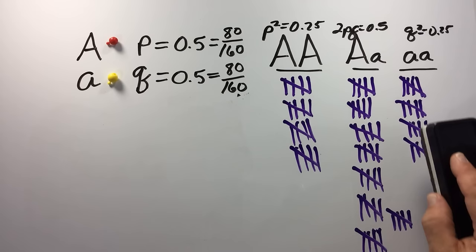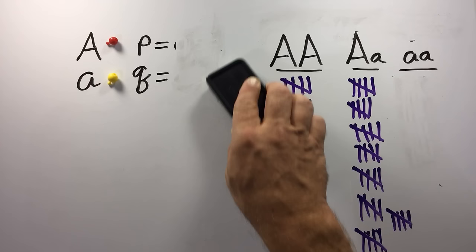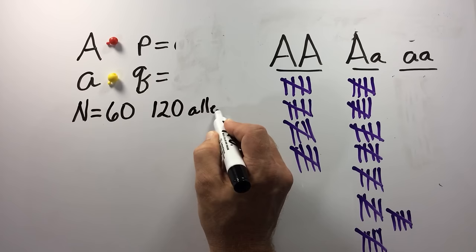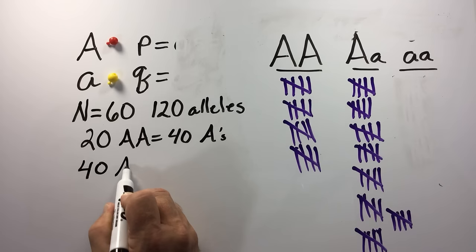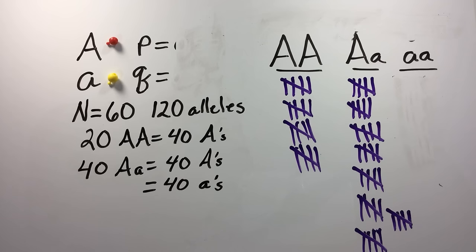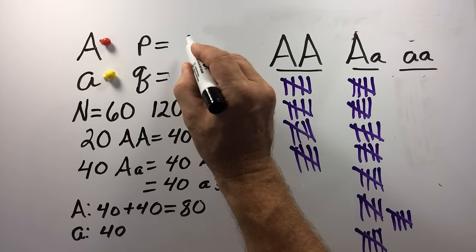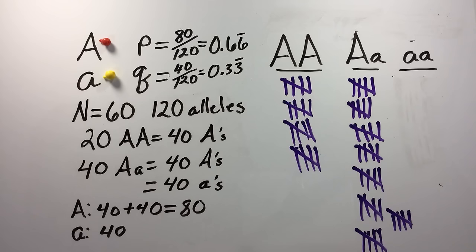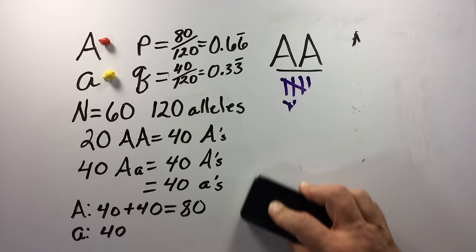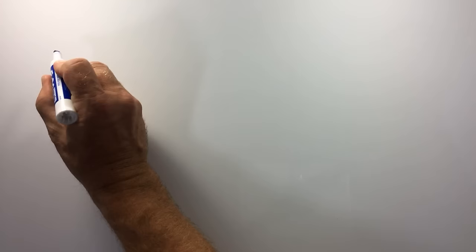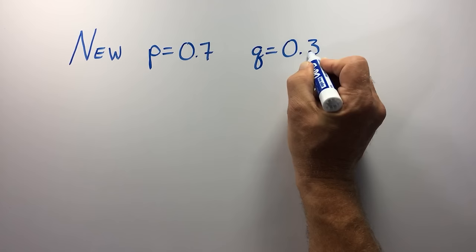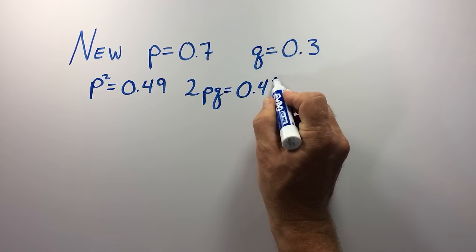Let's next investigate what would happen if something were to act on this population, such as selection against all of the homozygous recessive individuals. This would require us to recalculate allele and genotype frequencies. Because the population size has changed to 60 individuals, we now have only 120 alleles. In this new population, there are a total of 80 big A alleles and 40 little a alleles, giving an allele frequency of approximately 0.66 for the big A allele and 0.33 for the little a allele. Plugging these new numbers back into the Hardy-Weinberg equation shows how the change in allele frequencies results in a change in the predicted genotype frequencies.